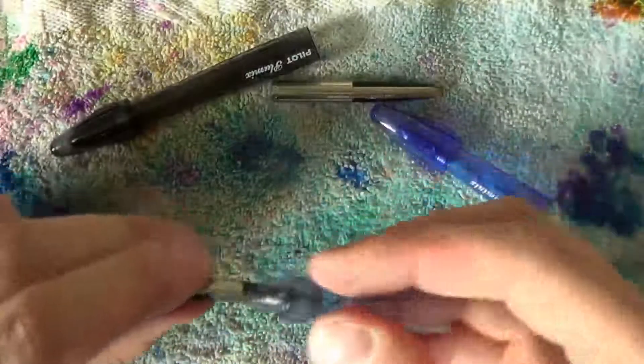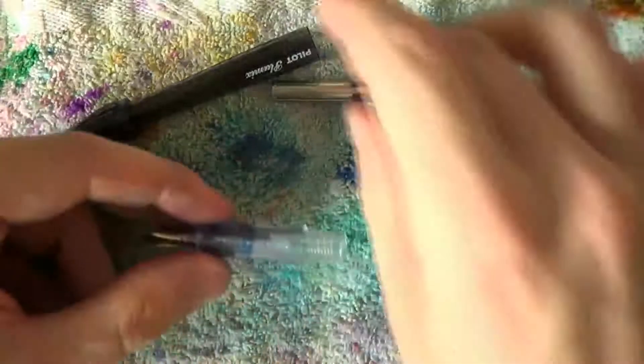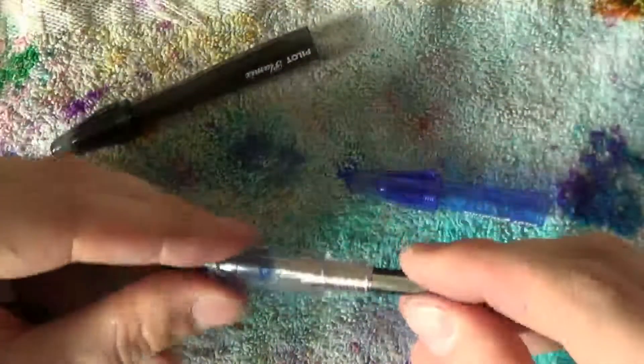Once you're ready after cleaning, slide them back into the section. Put the converter back on. Screw the barrel back in place and cap the pen.